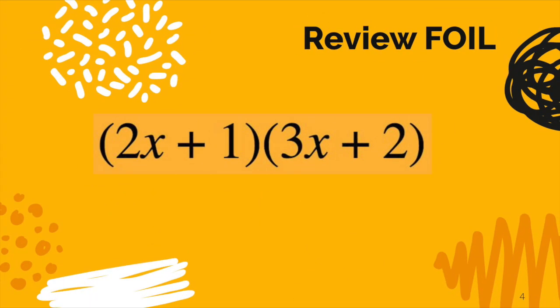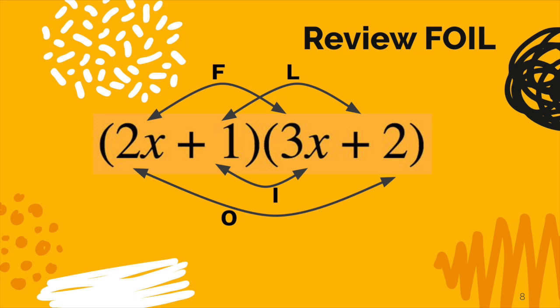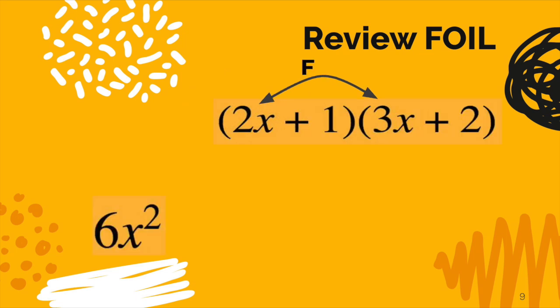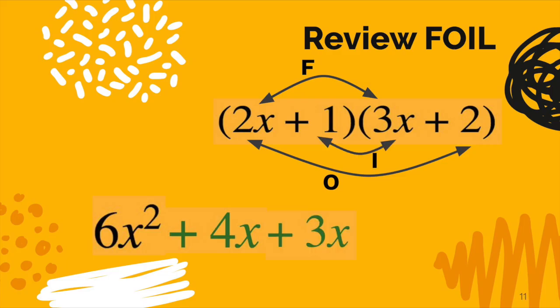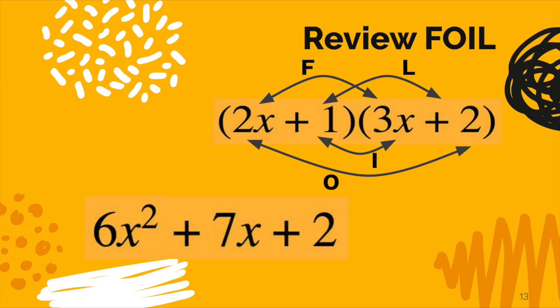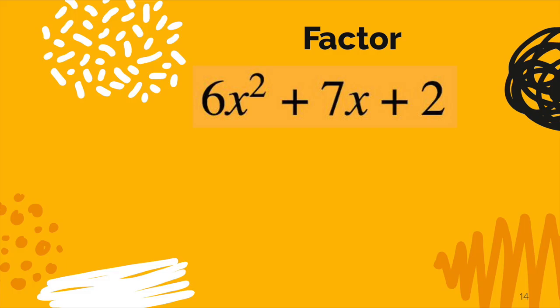Earlier in your math class, you learned how to foil. You took two binomials and you multiplied them together, and you took the F, the O, the I, and the L, and you multiplied them all out. So for example, the F, you would get 6x². The outside, you would get 2x and 2, that's 4x when you multiply them. On the inside, you take 3 times 1, you get 3x. And then finally, the L would be 1 times 2 and 2. And then you would combine the middle terms, and you get 6x² + 7x + 2.